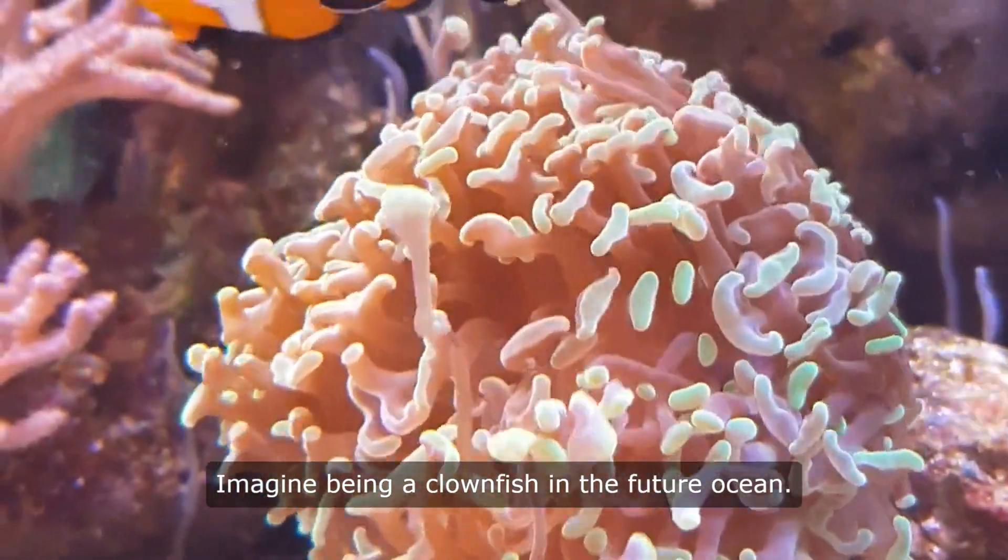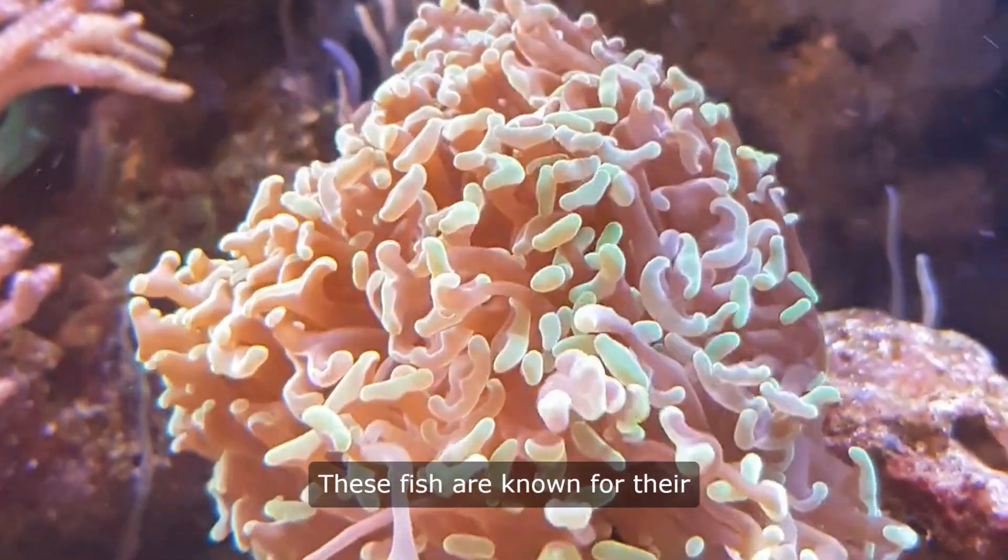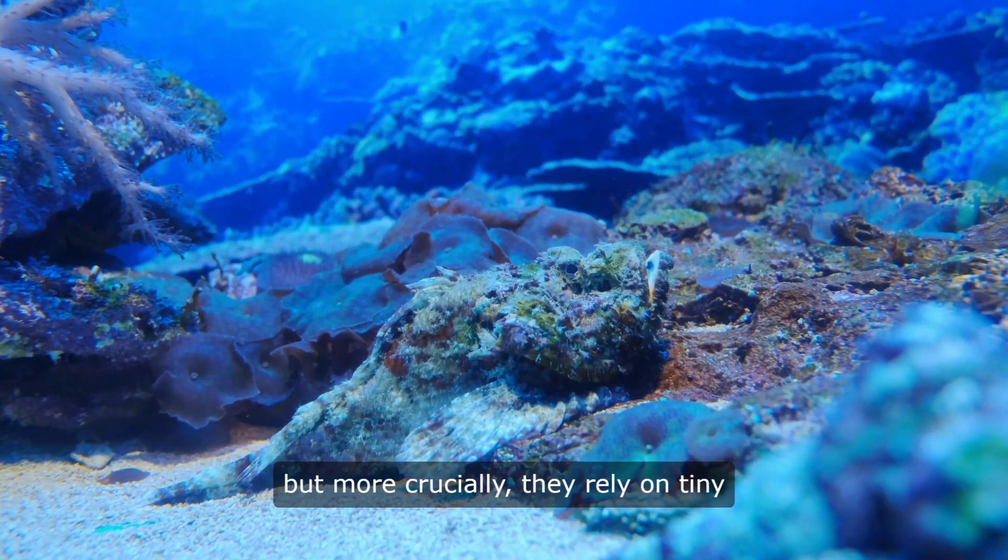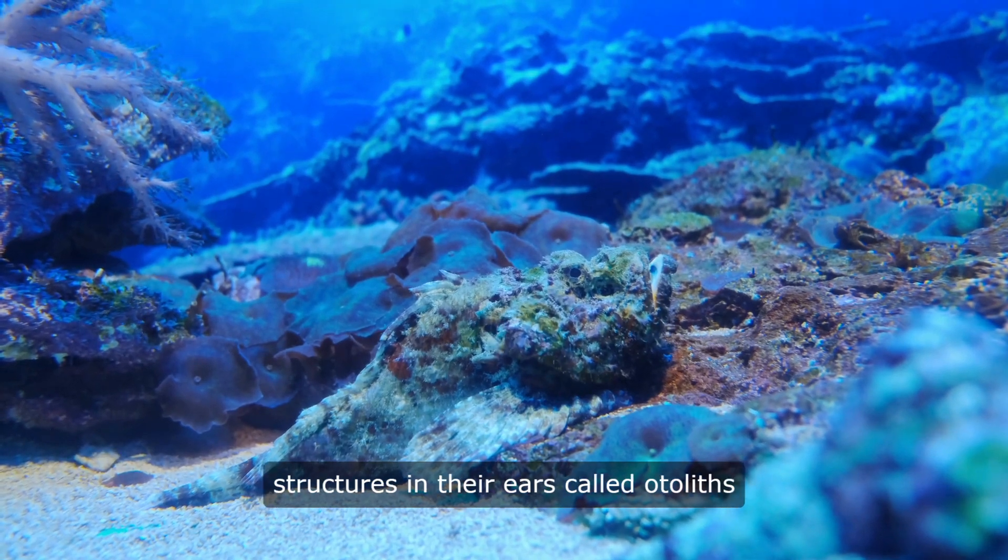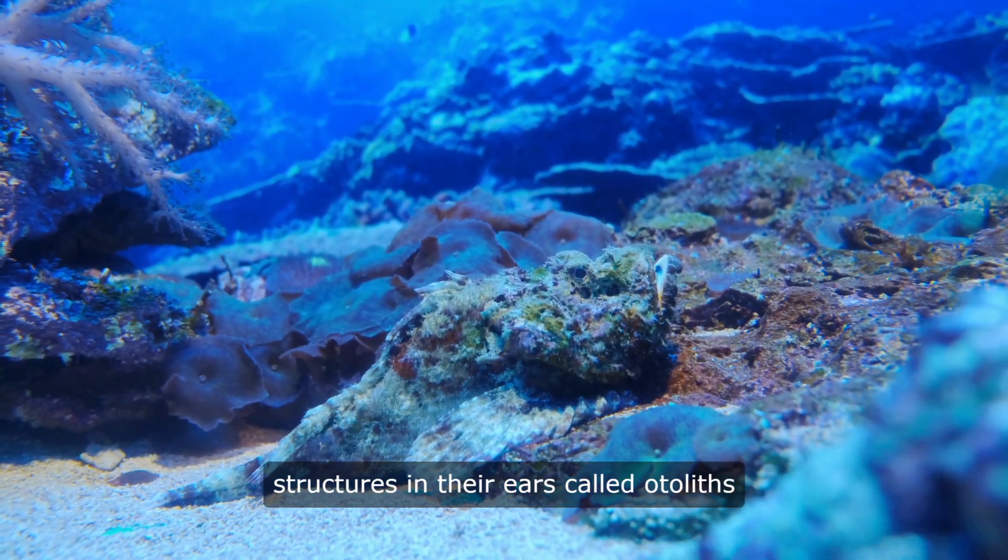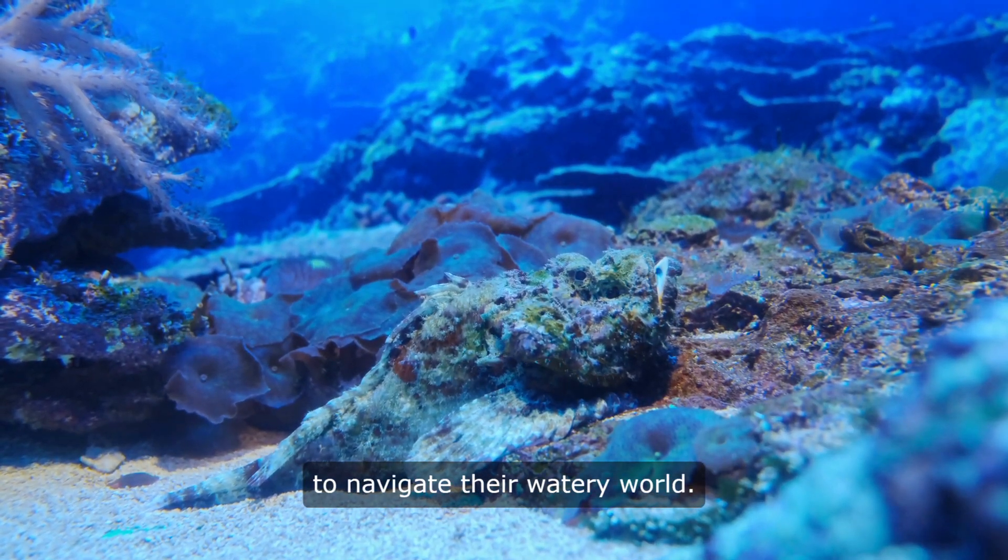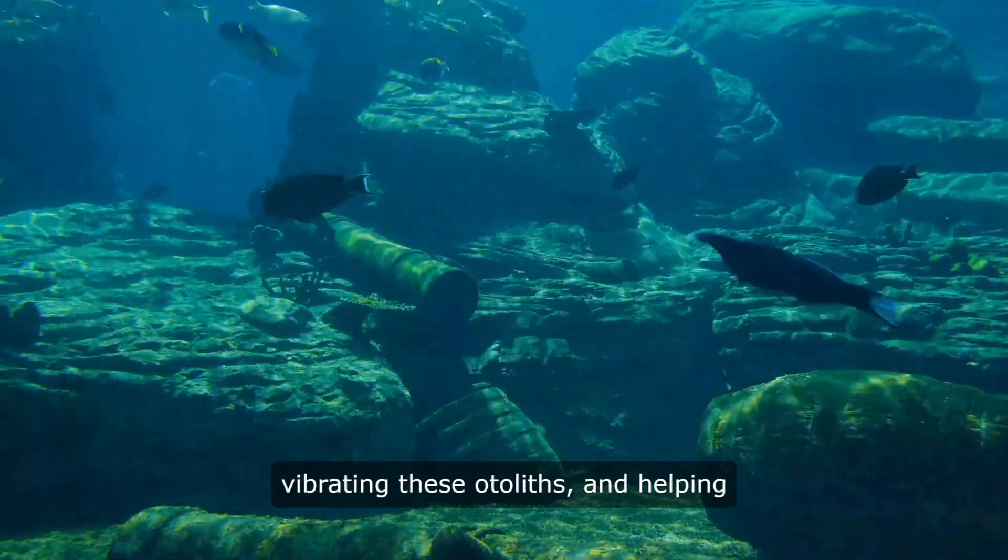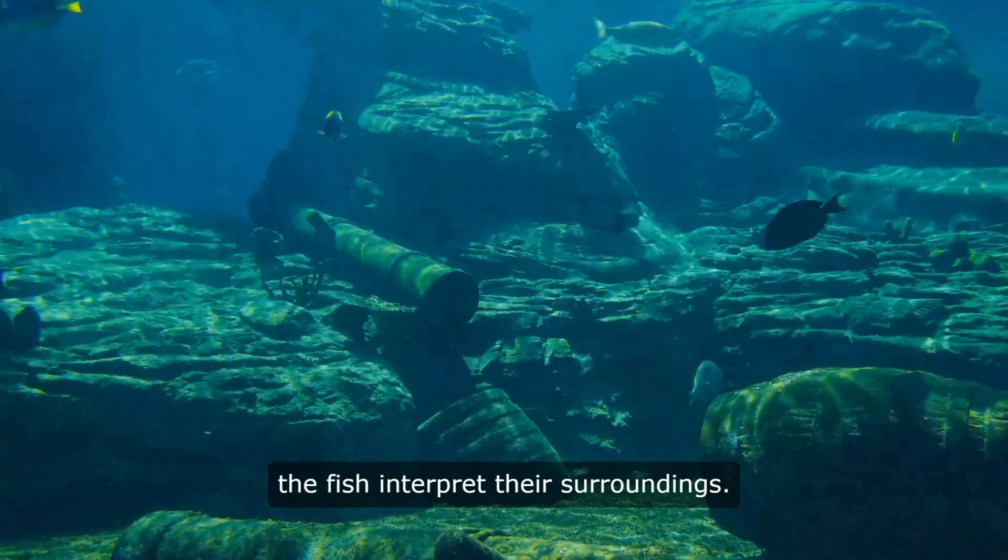Imagine being a clownfish in the future ocean. These fish are known for their vibrant orange and white colors, but more crucially they rely on tiny structures in their ears called otoliths to navigate their watery world. Sound waves travel through water, vibrating these otoliths and helping the fish interpret their surroundings.